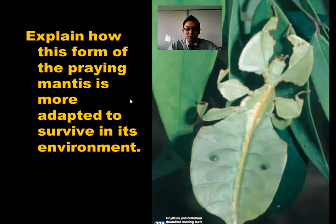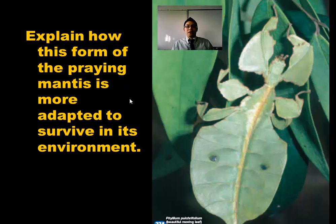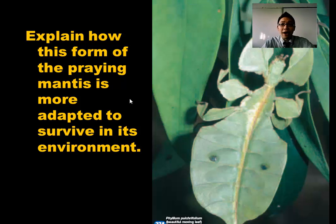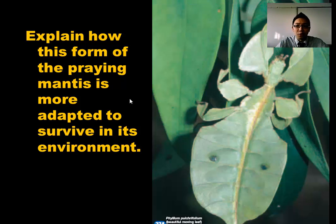Explain how this form of praying mantis is more adapted to survive in its environment. By the end of our discussions, you should be able to come up with an explanation for how a physical trait like this could have come about through the process of natural selection — evolution by natural selection.